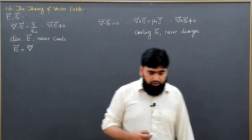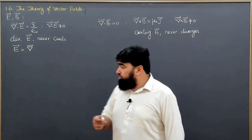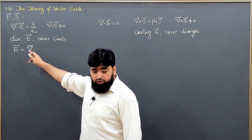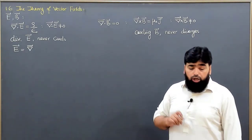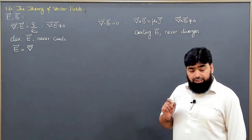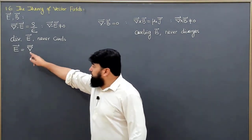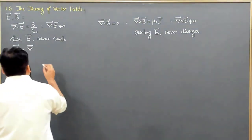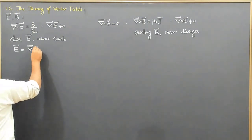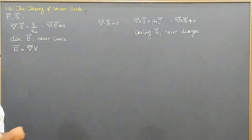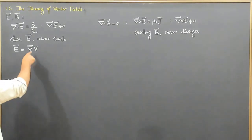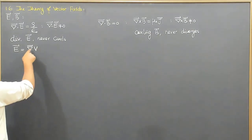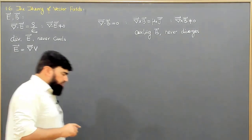This means the electric field is the gradient of a potential. That potential is supposed to be a scalar quantity, because we cannot take the gradient of a vector quantity. That is why we write the potential of this electric field as V, which is a scalar quantity. When V varies in a certain direction, it generates the electric field.